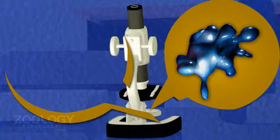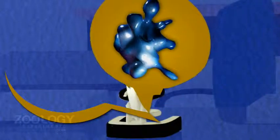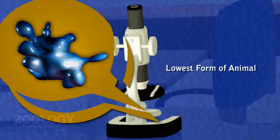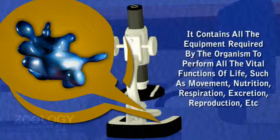Amoeba is the most suitable free-living available protozoan. It is regarded as the lowest form of animal as its body consists of a simple fleck of protoplasm. The cellular body performs all the vital functions of life such as movement, nutrition, respiration, excretion, reproduction, etc.